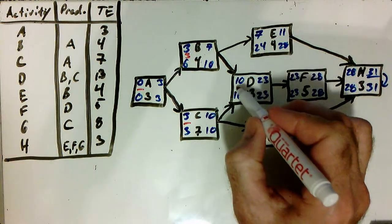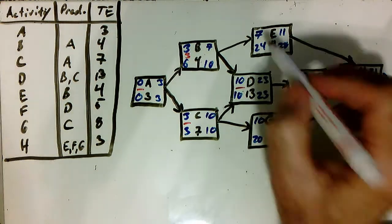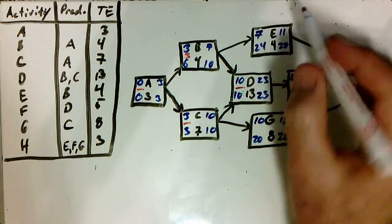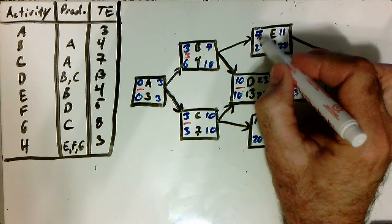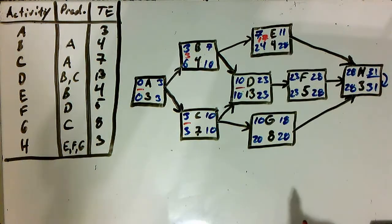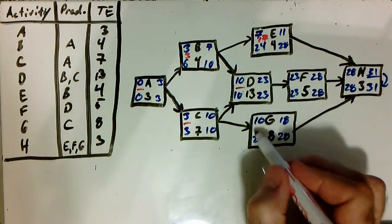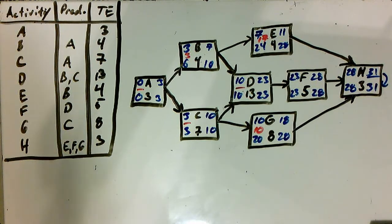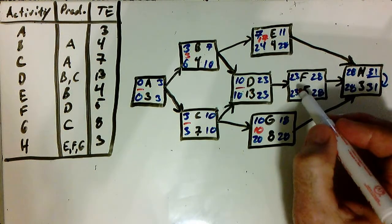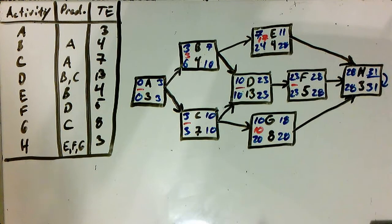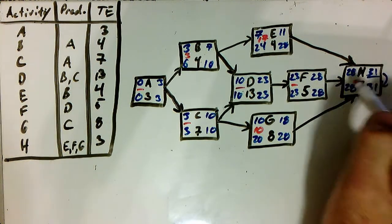Here, ten minus ten, we have no slack. Twenty-four minus seven, we have slack of seventeen. Twenty minus ten, we have a slack of ten. Here, twenty-three minus twenty-three. We have nothing. Twenty-eight minus twenty-eight, nothing.